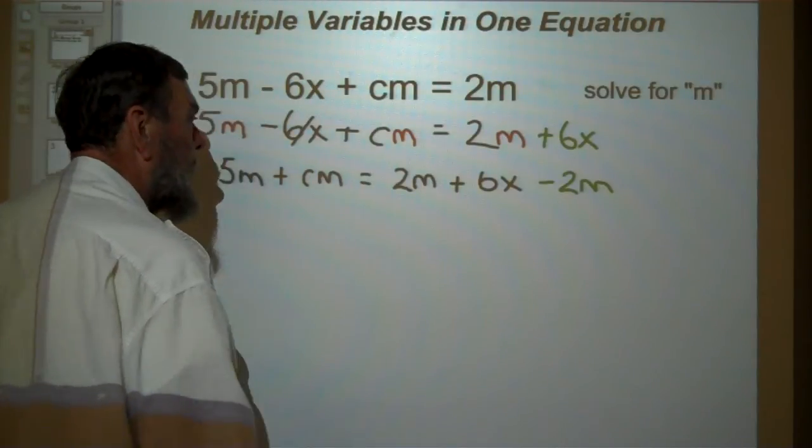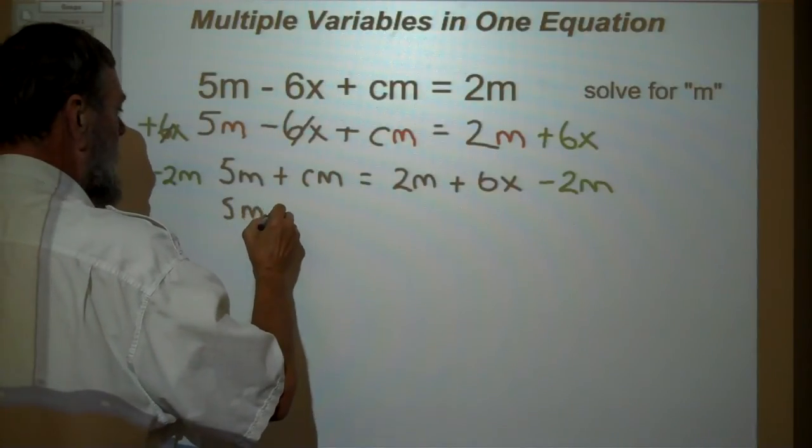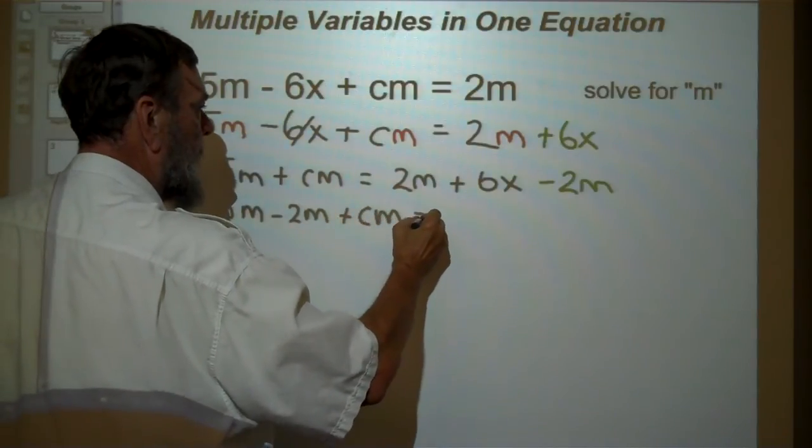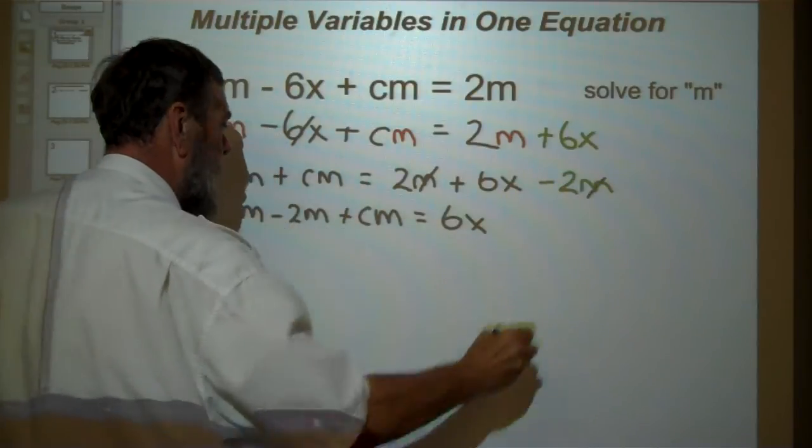Now what have we got? Well, now we've got 5m minus 2m plus cm equals 6x. The 2m's over here canceled.